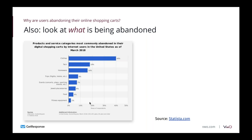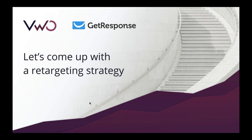Maybe some products have too high pricing margins, or perhaps your communication in these categories isn't convincing. So it's important to look at what is being abandoned and whether you actually want to convert these subscribers into paying customers. With that out of the way, let's look at the ways to come up with a retargeting strategy — it's a several-step process.